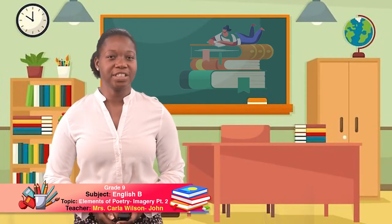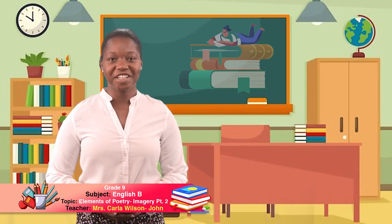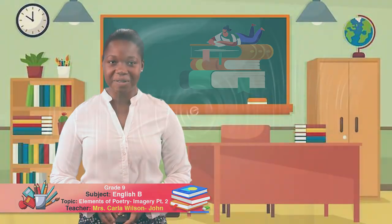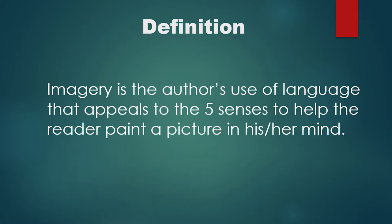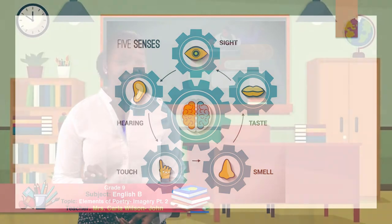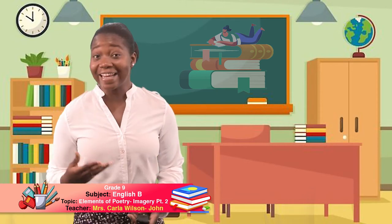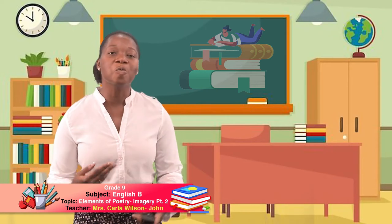So let's recap. Imagery. What did we say was the root word for imagery? Image, yes. And our definition was: imagery is the author's use of language that appeals to our five senses to help the reader paint a picture in his or her mind. And we went through our five senses: our sense of touch, sight, taste, smell, and hearing. The author or the poet uses words that appeal to these five senses, enabling you to imagine what he or she wants you to imagine.